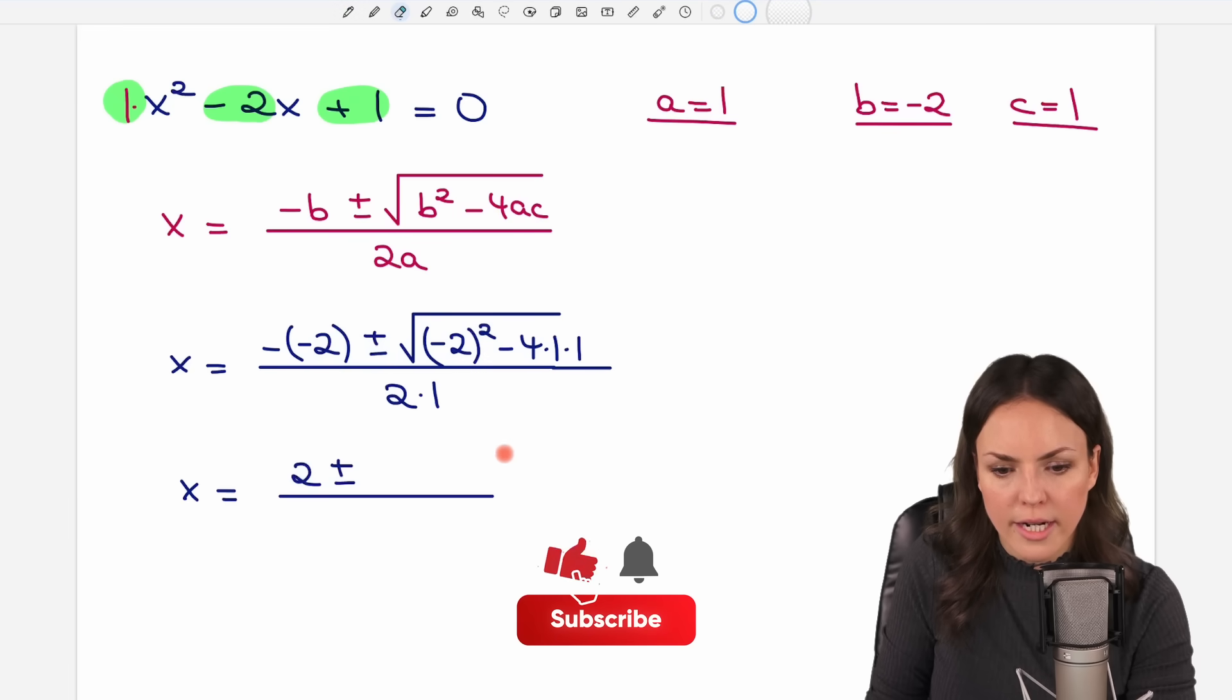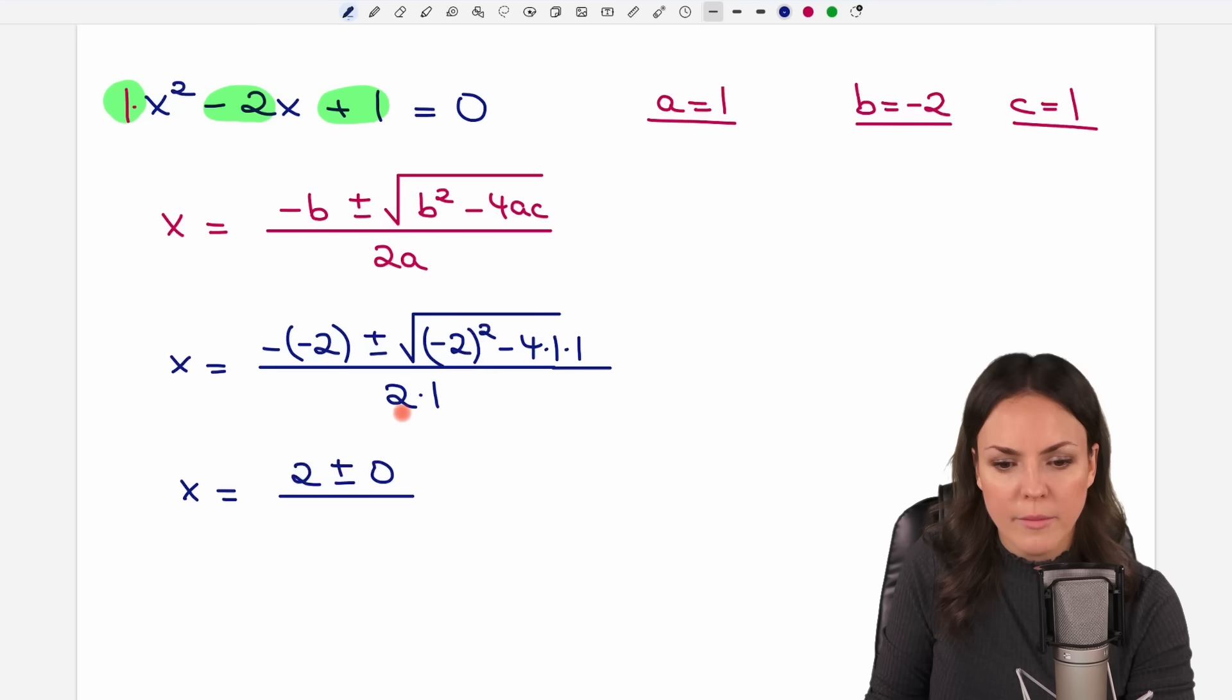So we have the square root of 0 which equals 0. We can already write this like this. And then in the denominator 2 times 1 equals 2. Okay, we get 2 solutions here because we have the plus first. So 2 plus 0 equals 2. And we divide this by the 2.